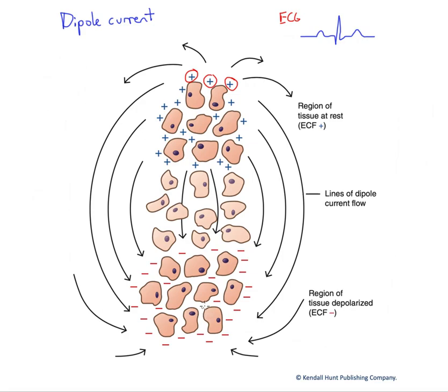Conversely, we could have another region that already depolarized, and in that case, cations would flood into the cytoplasm, making it positive relative to the outside, so the outside is negative here, shown by the negative signs, the minus signs.